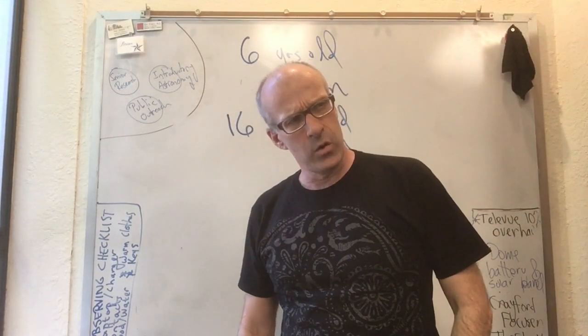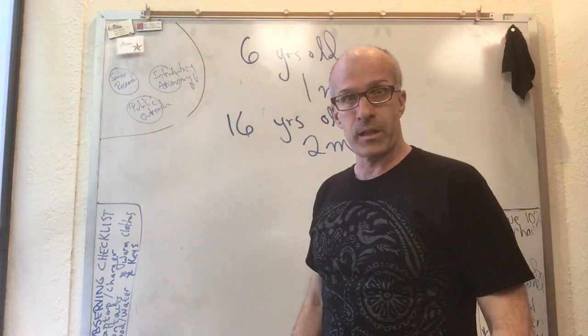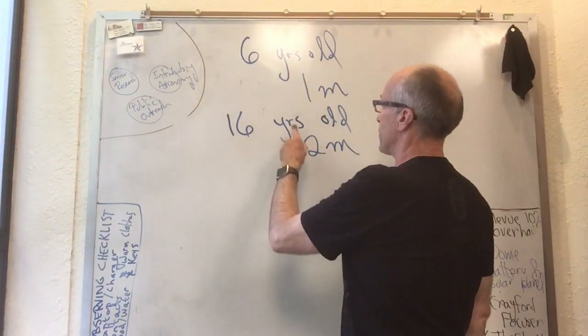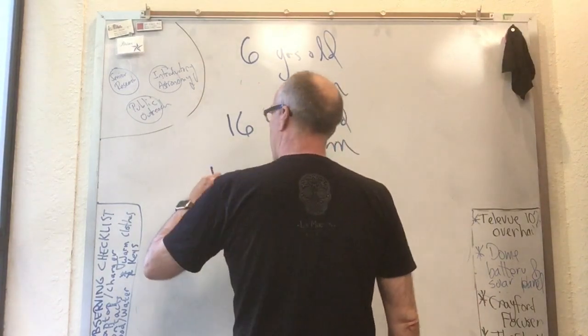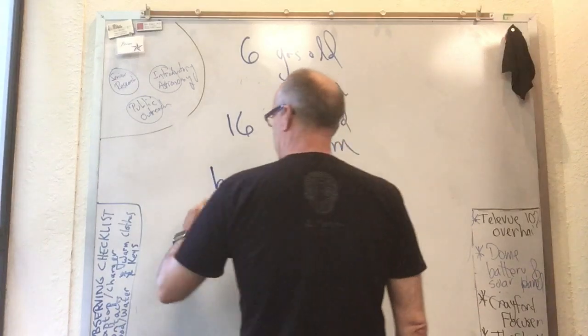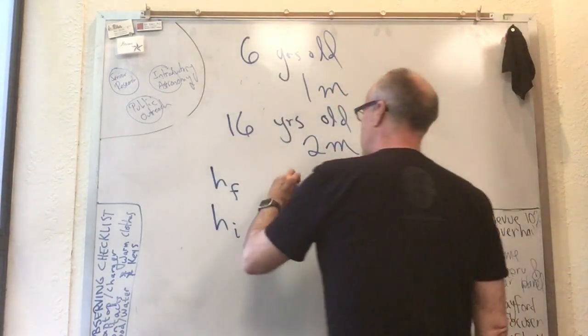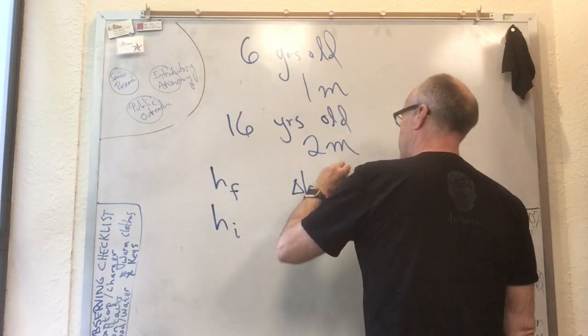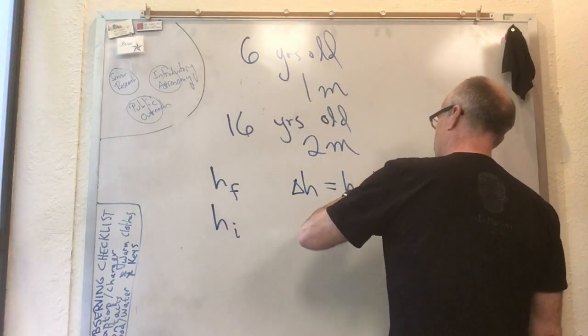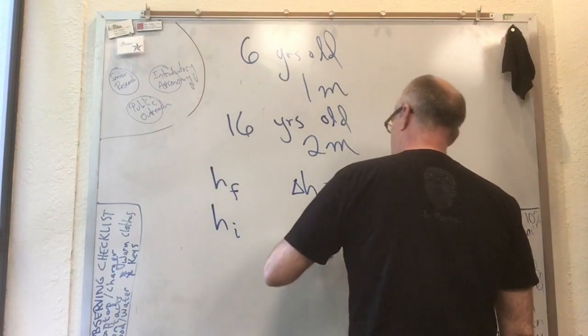We can compute a rate of change of height from this. How do we do it? Well, we call this two meters, we call that height sub final, and we call this one meter, we call that h sub initial. The change in the height is the final minus the initial, which is two meters minus one meter, which equals one meter.